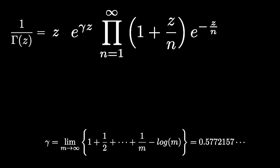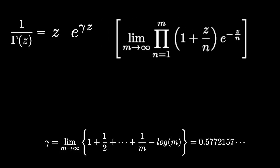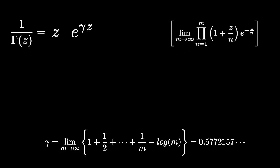Let's write out the definition of an infinite product and the Euler-Mascheroni constant. Then we'll combine the limits and take them both at the same time.